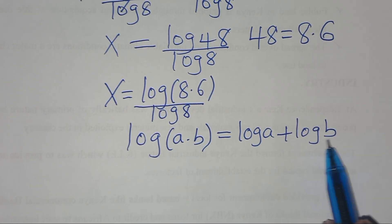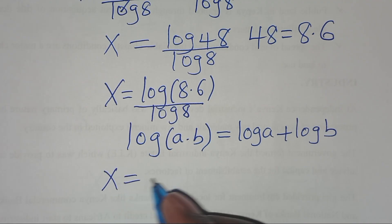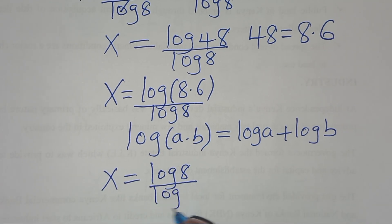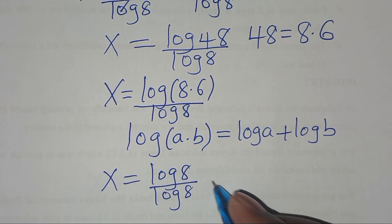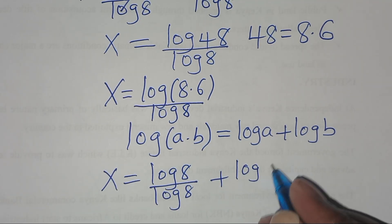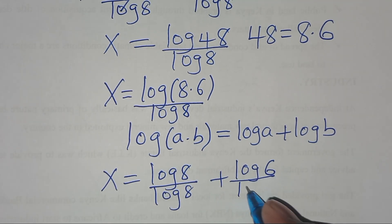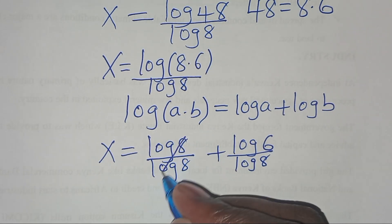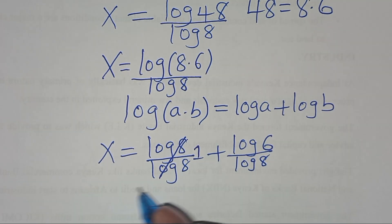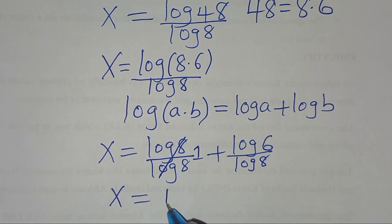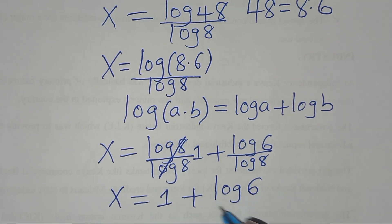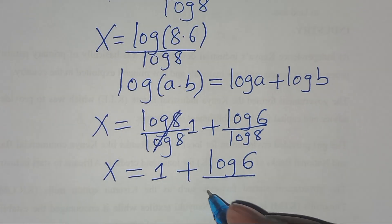Applying this property, then x is equal to ln(8) divided by ln(8), plus ln(6) divided by ln(8). So ln(8) and ln(8) simplifies to 1, so that x is equal to 1 plus ln(6) divided by ln(8).